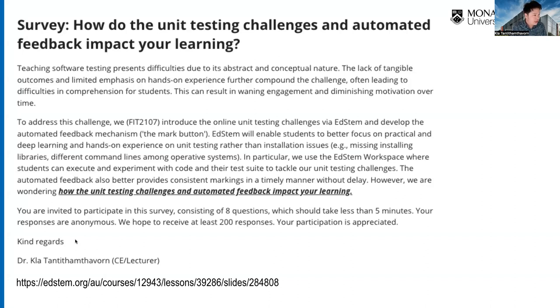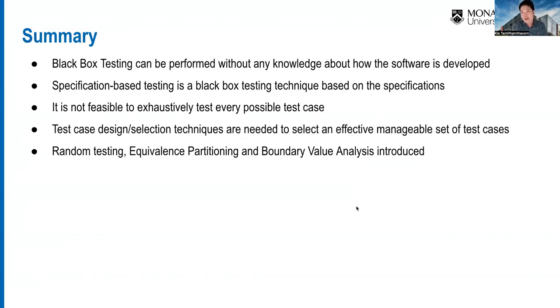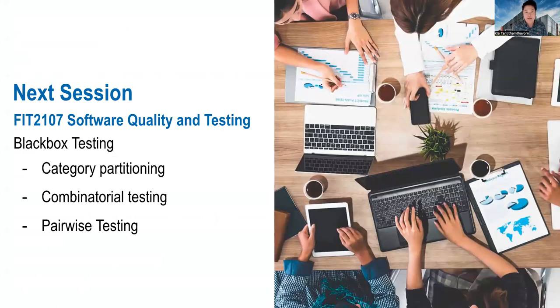We will update the slides on Ed Stem immediately after the lecture. That's all for today's lecture. We covered black box testing techniques and how they differ from white box: random testing, equivalence partitioning, boundary value analysis, and decision table. We can't test everything — it's too exhaustive — so we use systematic approaches to effectively decide test cases and achieve the highest code coverage. Next week we'll cover category partitioning, combinatorial testing, and pairwise testing. Have a good day everyone!